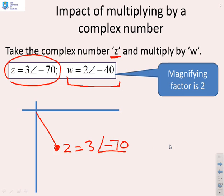First of all, the magnifying factor is 2, so we're going to get twice as big. So if I was to make it twice as big, I would end up with 6 arg minus 70. So that's the stretching which we get from the 2.